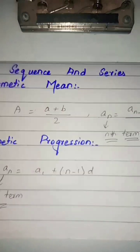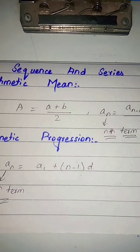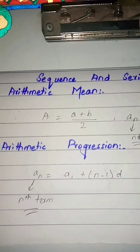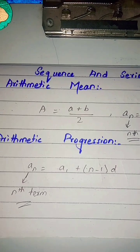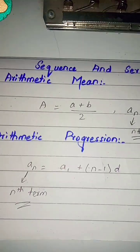Today we will discuss sequence and series, chapter number six from first year. We have two terms: arithmetic mean and arithmetic progression. First of all, arithmetic mean.